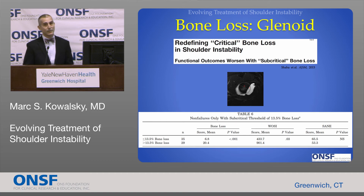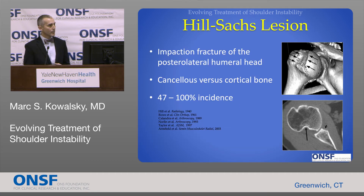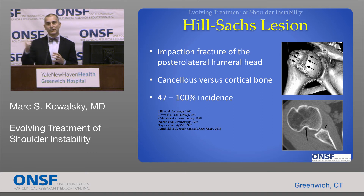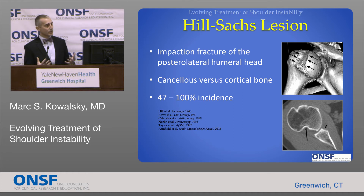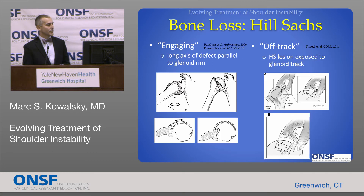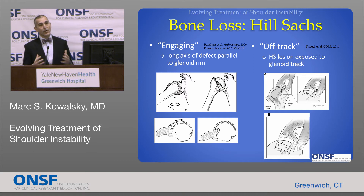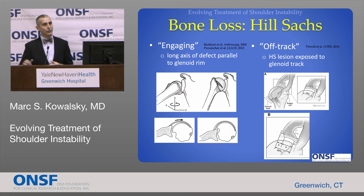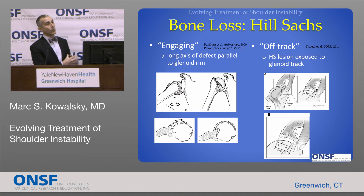Bone loss doesn't only occur on the socket side. You can also get bony involvement on the ball side. When a relatively soft ball bangs against the firm bone of the glenoid rim during a dislocation, the ball can actually indent slightly, much like a ping-pong ball. This is called a Hill-Sachs lesion, and it's very common in almost every dislocation we see. Small Hill-Sachs lesions are usually irrelevant — we can basically ignore them — but there are certain Hill-Sachs lesions that are important. The initial concept was an engaging Hill-Sachs lesion: if you raise your arm into the vulnerable position and that indented portion of the ball was exposed to the glenoid rim, the ball can fall out more easily. That's an important Hill-Sachs to pay attention to when deciding how to treat patients.